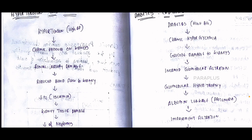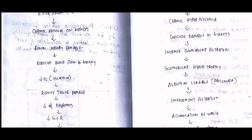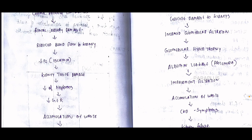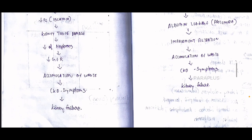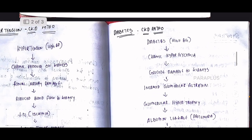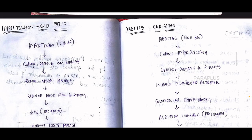With reduced blood flow, the kidney receives less oxygen, so the oxygen level decreases and kidney tissue is automatically damaged. The kidney is made up of nephrons, so the number of nephrons is reduced, ultimately reducing the GFR rate and the kidney's filtration capacity. Waste products and fluid accumulate in the body, leading to CKD symptoms through stages 1 to 4, eventually progressing to kidney failure.